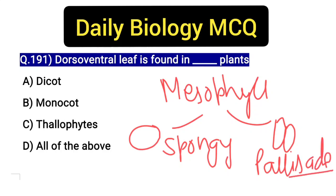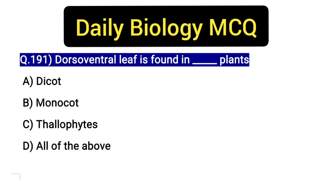Palisade cells are present in dicot plants and spongy cells are also present in dicot plants. A common related question involves venation. The common question on dicot and monocot is about venation.